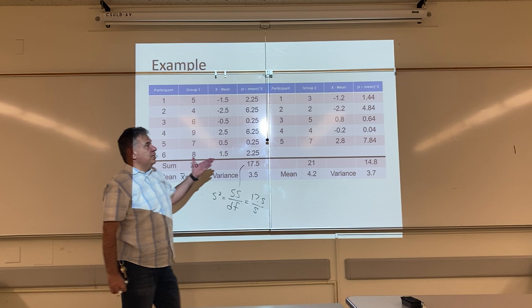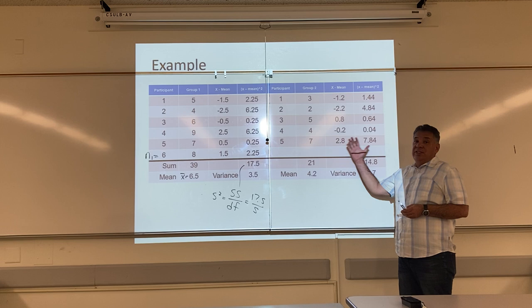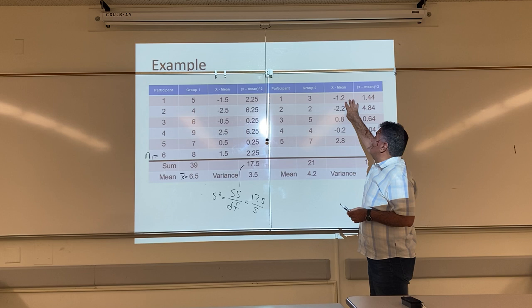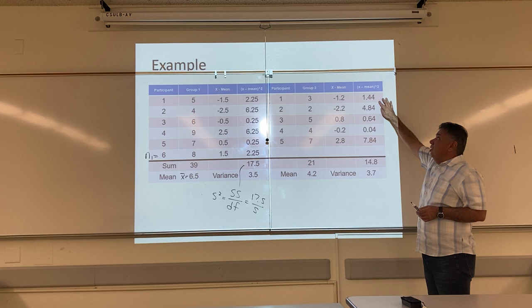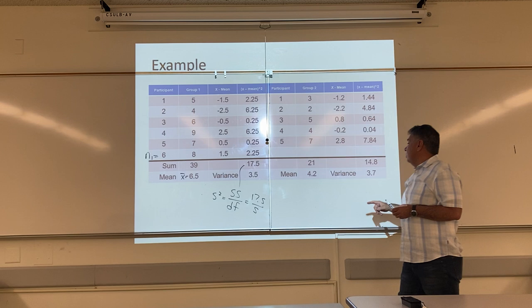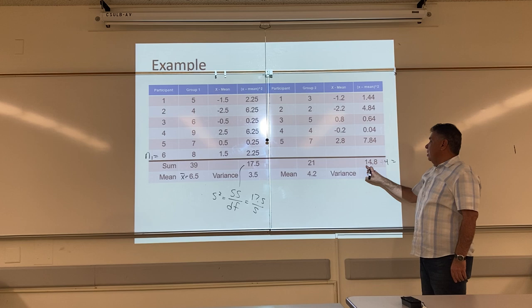I do the same thing for the second group. I make a table to find the variance for the second group. I add up my scores. 5, 10 plus 11 is 21. 21 divided by 5 is 4.2. 3 minus 4.2 is negative 1.2. Negative 1.2 squared is 1.44. This is the difference. This is the difference squared. All of this work is to find the sum of the squares, the sum of the differences squared. I divide by my degrees of freedom, which is 5 minus 1. I divide this by 4. When I divide by 4, the answer is 3.7.